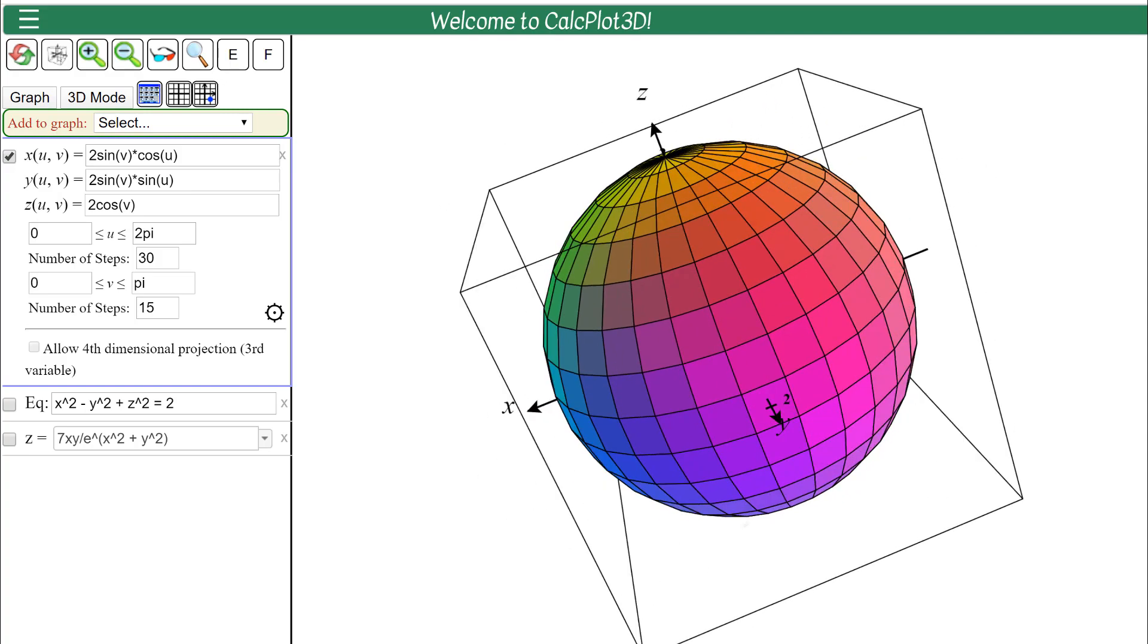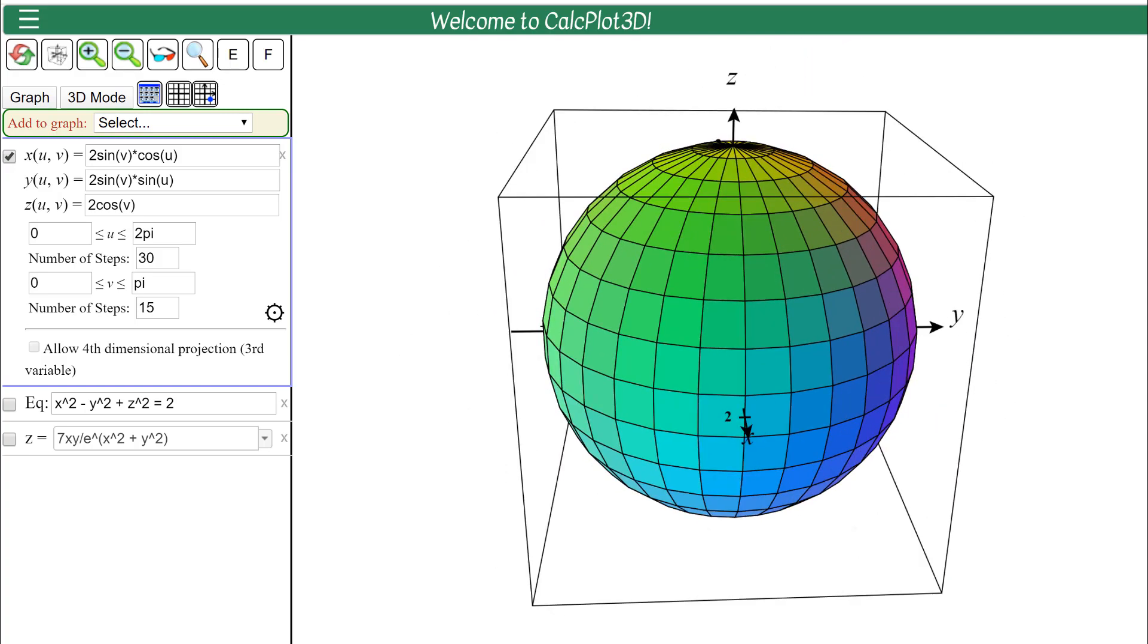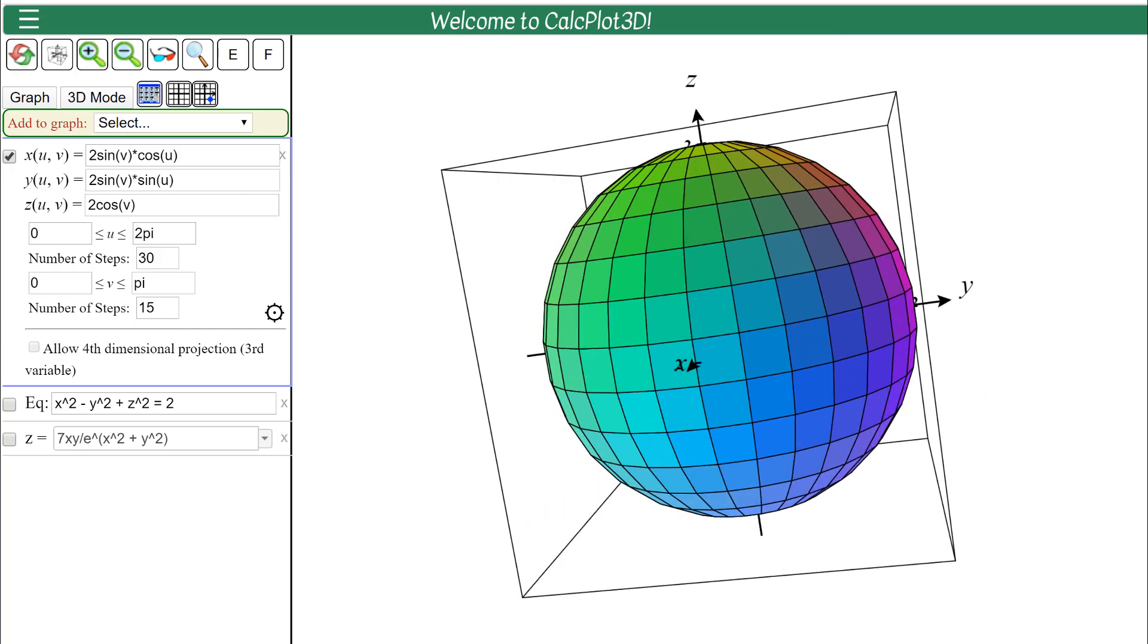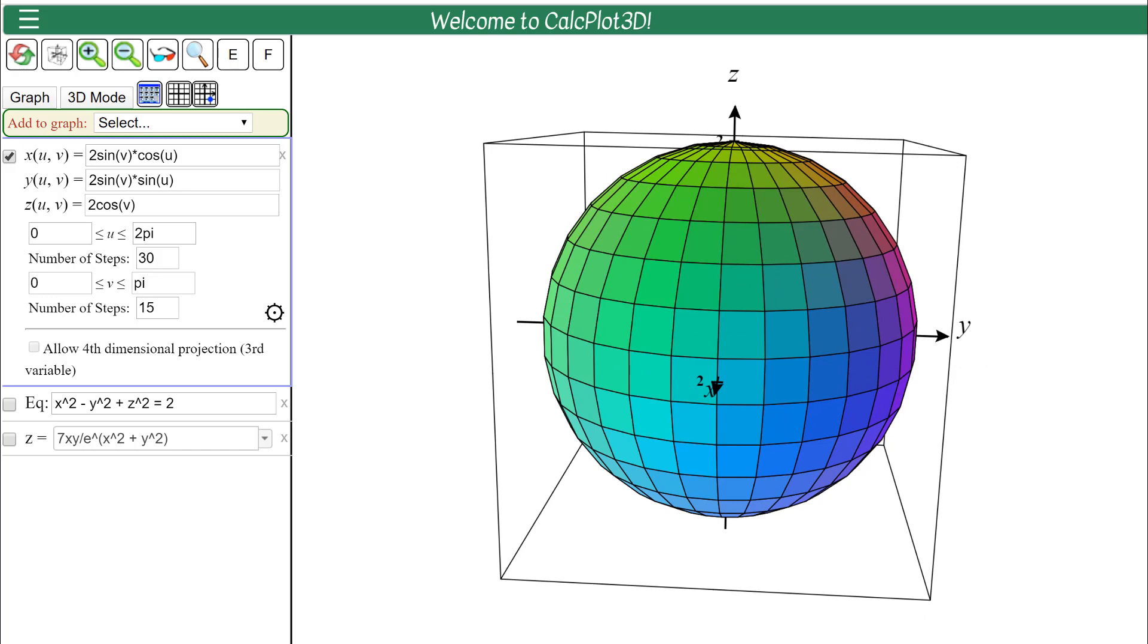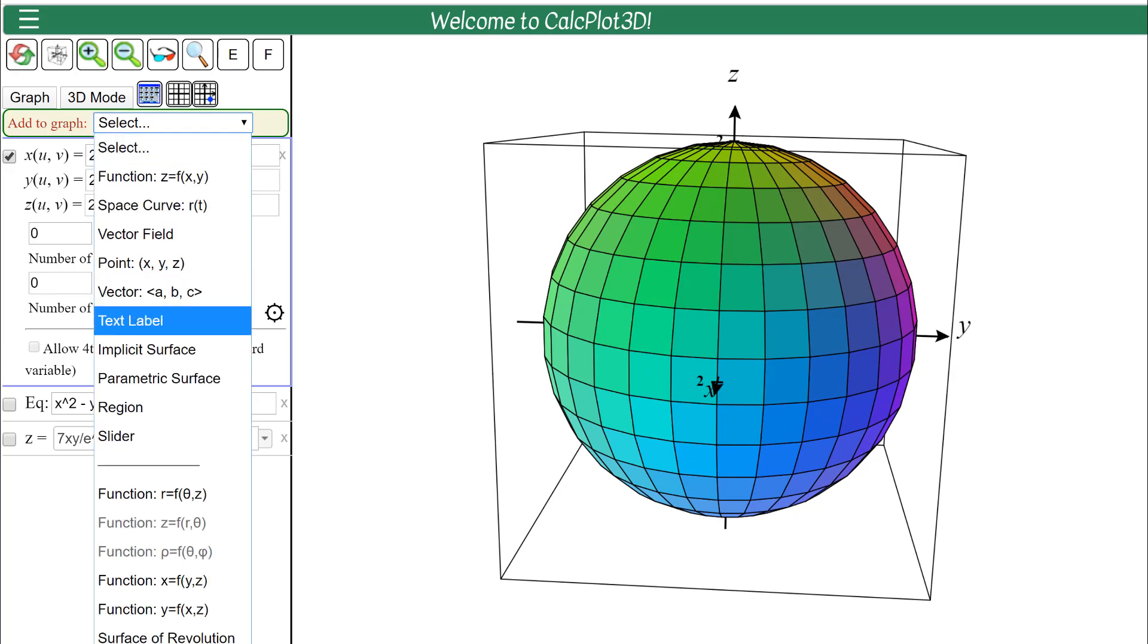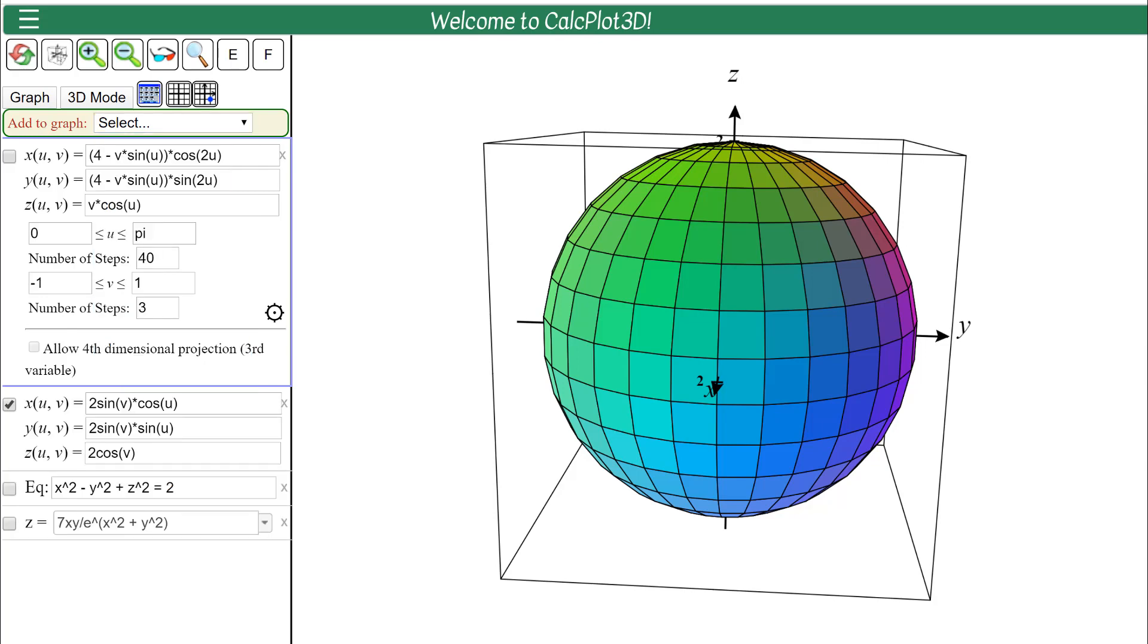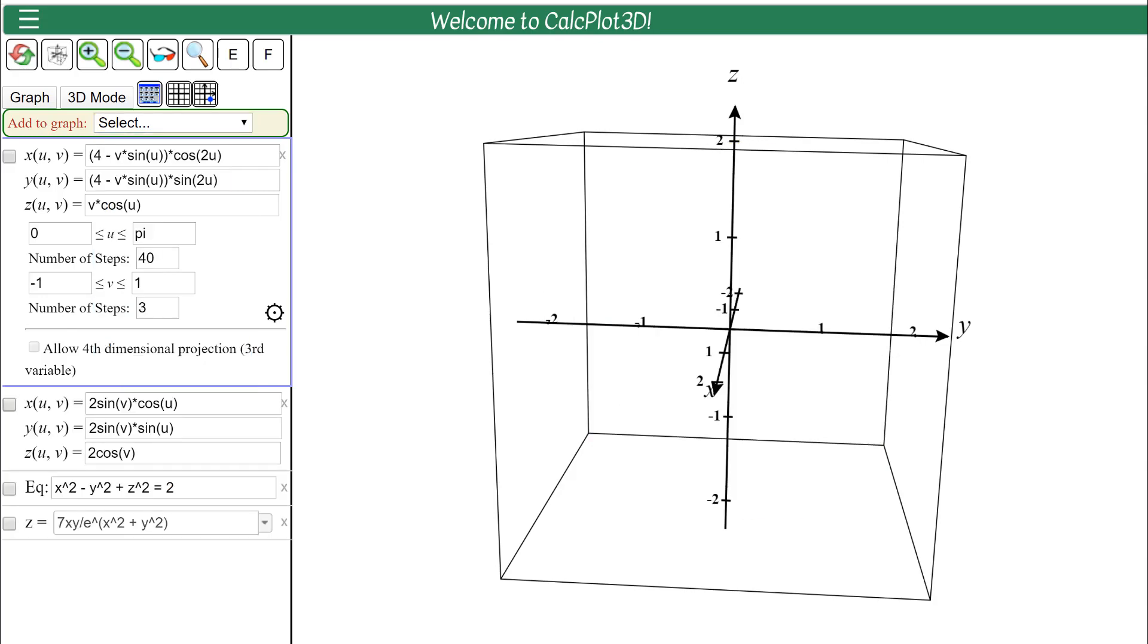And this one appears to be a sphere so we'll actually look at that in our next video as one of the examples that we'll talk about how they got this equation. But I want to just do a little bit of playing around here with CalcPlot3D. I'm going to tell it to add another parametric surface and we'll just look at some of these examples that they have here.